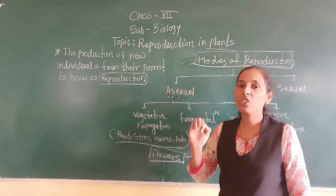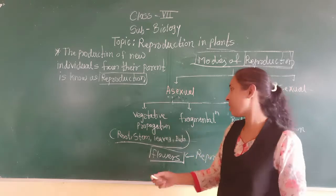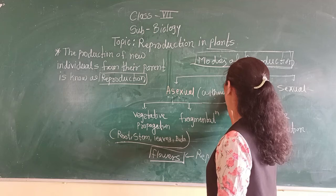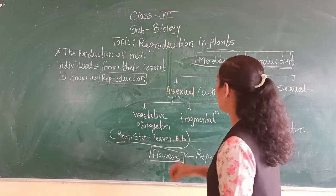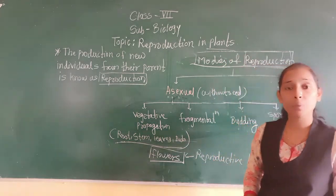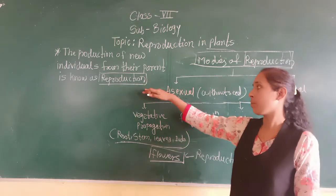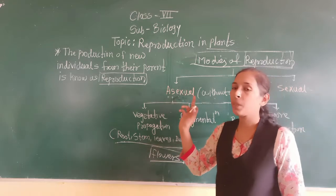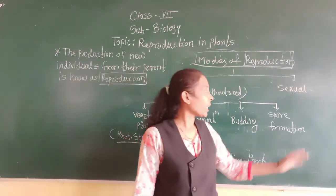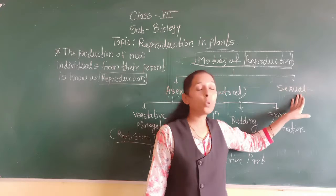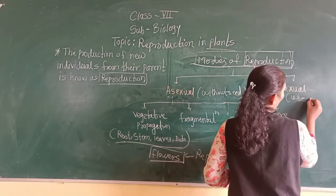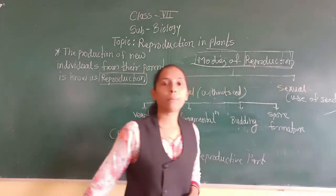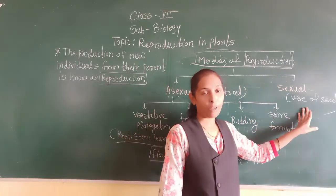The plants which can reproduce without a seed — that type of reproduction is called asexual reproduction. The plants which can get reproduced by the use of a seed — that type of reproduction is called sexual reproduction.